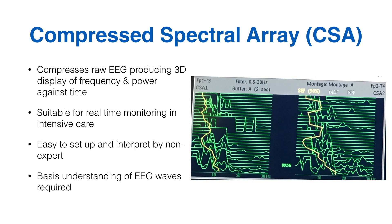For these reasons, there was a need for a system that could be easily set up and interpreted by intensive care staff, allowing continuous real-time monitoring of brainwave activity. One example of this is the Compressed Spectral Array, or CSA. It compresses the raw EEG waves and produces a 3D graphical display of frequency and power against time.